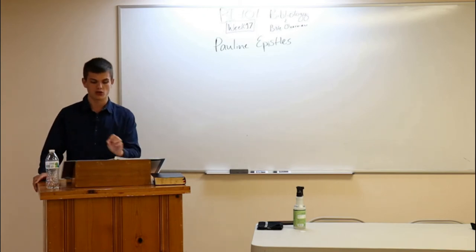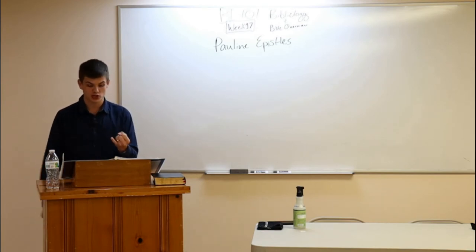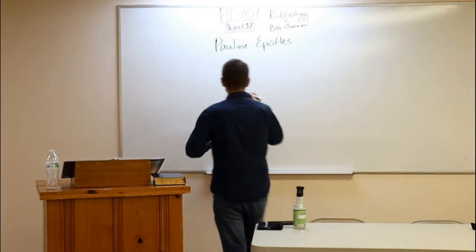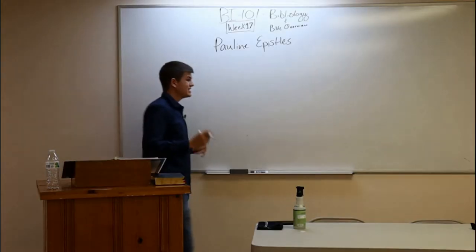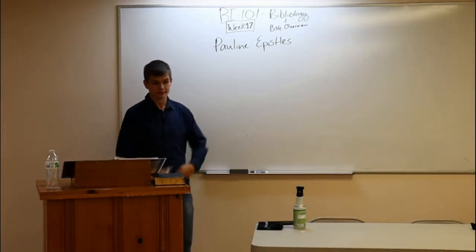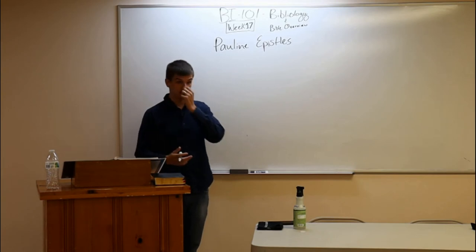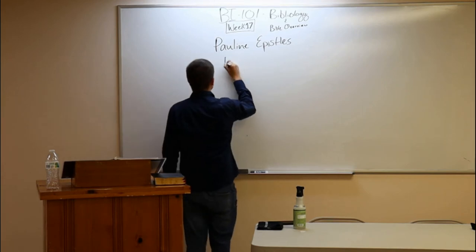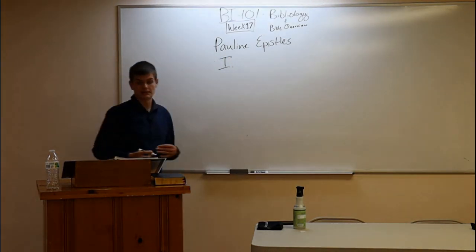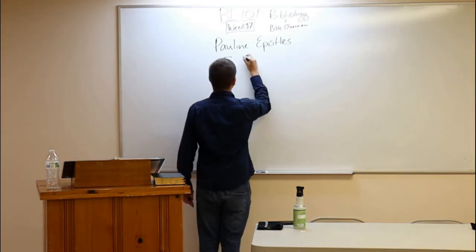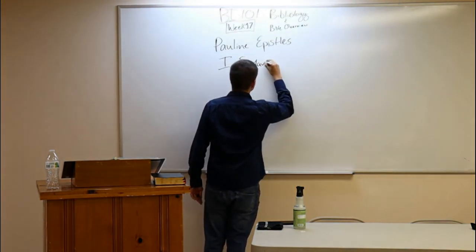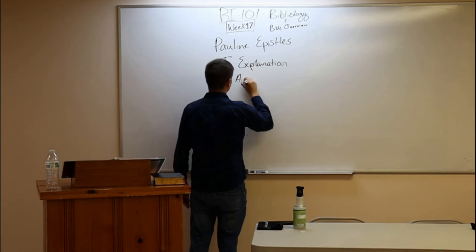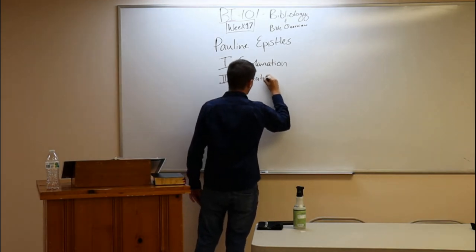Now, the normative structure of Paul's letters includes explanation, application, and instruction. When we're reading Paul's letters, we should be on the lookout for this. Of course, he's going to give some type of greeting and salutation. I thank God for you, grace and peace unto you from Jesus Christ and his Father. And then we see doctrine or explanation. And then we see application, and it's application of the doctrine.